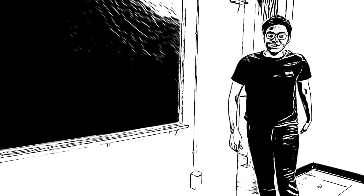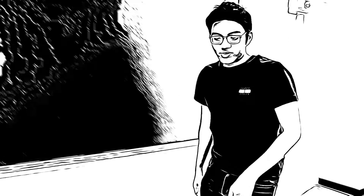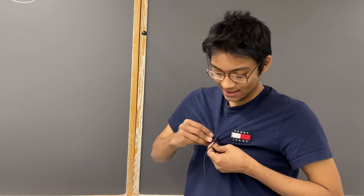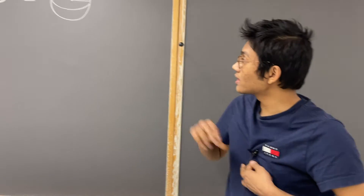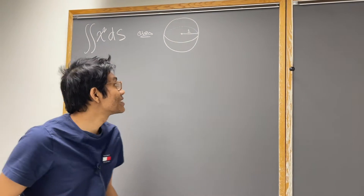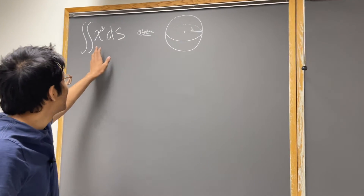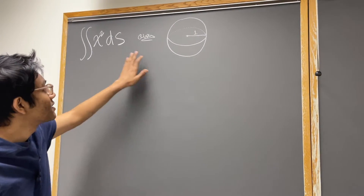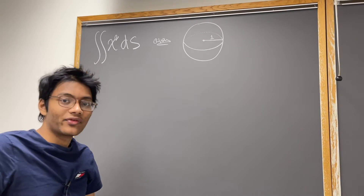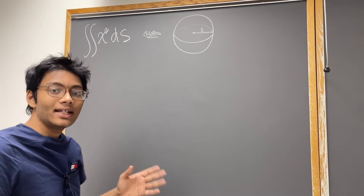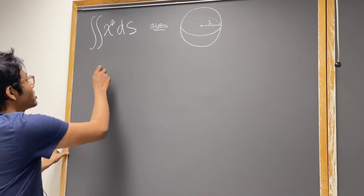Welcome to the next episode of differential equations. We're going to pick up where we left off. The problem we're going to try to solve is finding the surface integral of x squared ds over a unit sphere. The first thing you want to do in any surface integral problem is parametrize the surface.